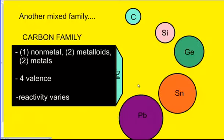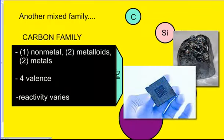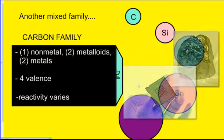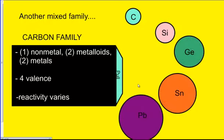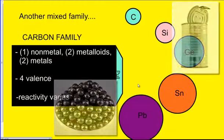The metalloids like silicon. Silicon is used in a lot of electronics, so it probably conducts electricity. Germanium is the other metalloid. As far as metals go, tin and lead are your two metals. So they're going to be shinier. They're going to conduct electricity.